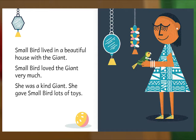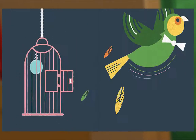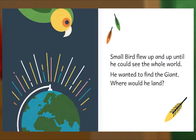She was a kind giant — she gave Small Bird lots of toys! Small Bird was sad when the giant wasn't around, so one day, Small Bird went to find the giant! Small Bird flew up and up until he could see the whole world. He wanted to find the giant. Where would he land?